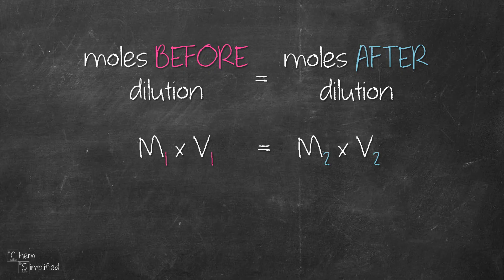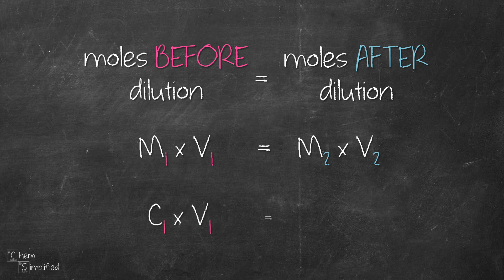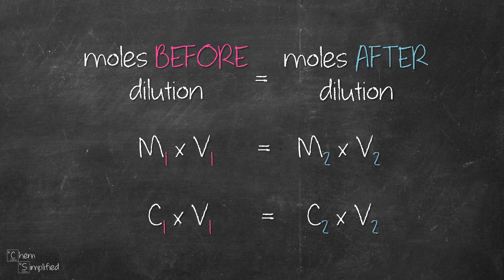On occasion, you may encounter dilution concentration problems that involve percent concentration rather than molarity. The idea is still the same. It's just that now you substitute concentration for molarity. So the formula changes to C1V1 equals C2V2.